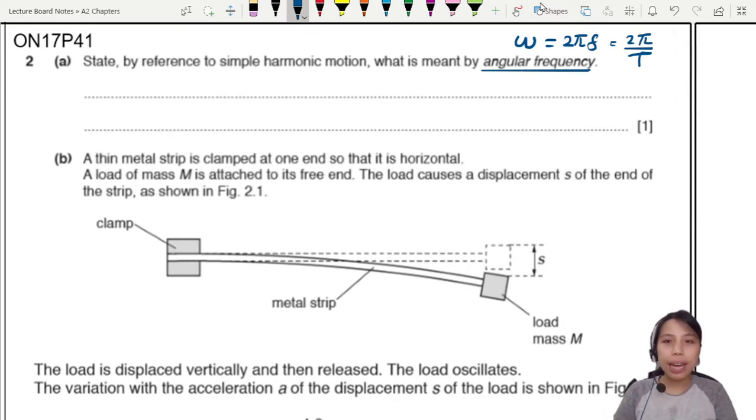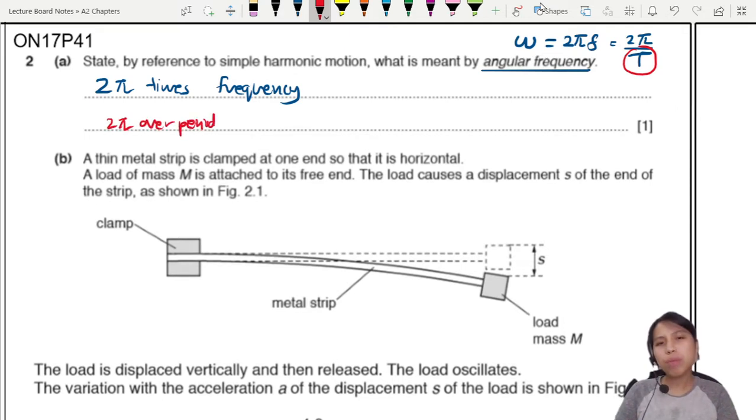So we can say that angular frequency is 2π times frequency, or if you would like to say in terms of period then you have to say 2π divided by the period T, one full cycle. So this is two possible ways to talk about this definition.